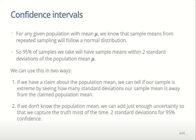We can use the properties of the normal distribution to describe how sample means are going to vary from sample to sample. For example, 95% of the samples we take will have sample means within two standard deviations of the population mean. The first way we can use this is if we have a claim about a population mean — we can tell if our sample was extreme by seeing how many standard deviations our sample mean is away from the claim.